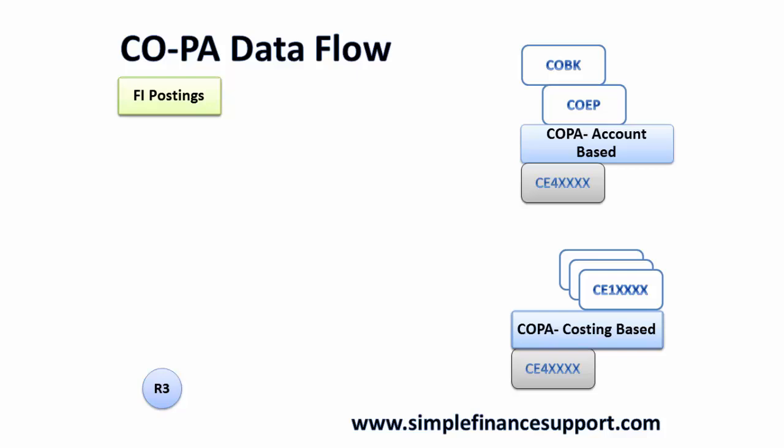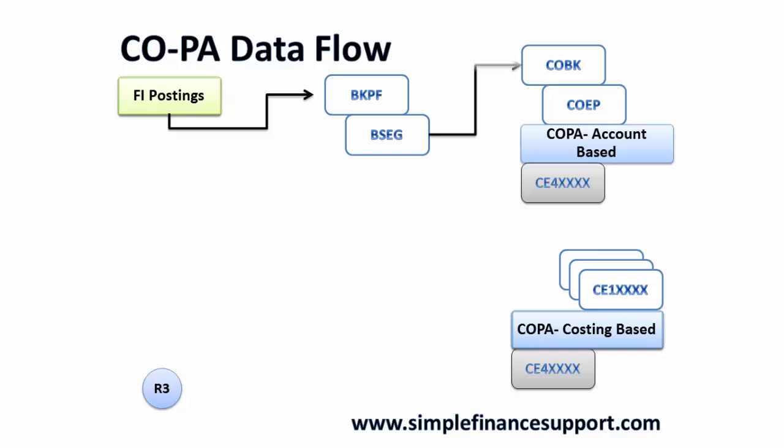Whenever there is any FI posting, the data goes into BKPF and from there to the line item table BSEG. It is integrated at the line item level — whether it is costing, cost center, or profitability analysis. If it is profitability analysis at the line item level, it triggers a CO posting to account-based COPA.